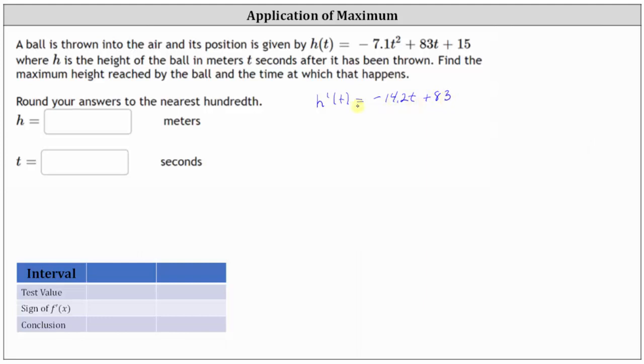Notice how there are no values of t where this will be undefined, and therefore to find the critical number, we set the derivative equal to zero and solve.